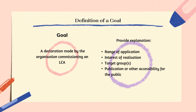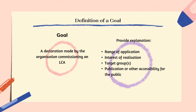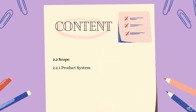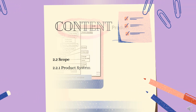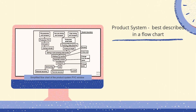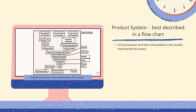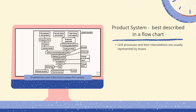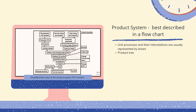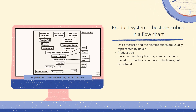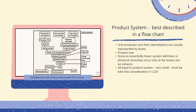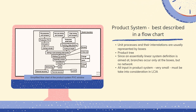The fundamental standard ISO 14040 explicitly points out the goal definition. Now moving on to the second subtopic, which is scope. The first one: Product System. A product system is best described in a system flowchart, where unit processes and their interrelations are usually represented by boxes. The entire, often very complex, pattern reminds of a tree and is therefore often called a product tree. Since an essentially linear system definition is aimed at, branches occur only at the boxes but no network. In LCA, all inputs in the product system, even very small inputs, must be taken into consideration in LCIA.